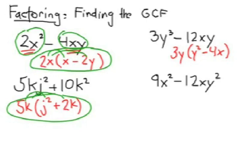Down below that, 9x squared minus 12xy squared. I can factor out a 3 and an x. So on the inside binomial, I would end up with 3x minus 4y squared.